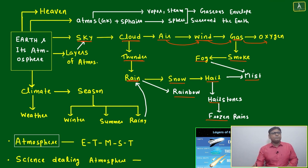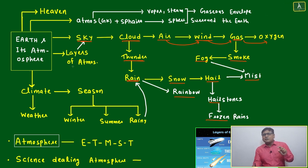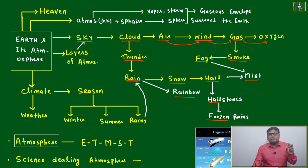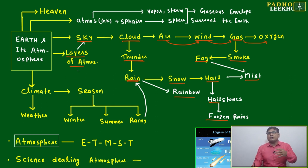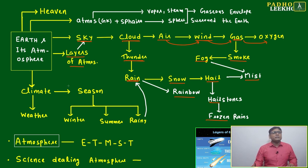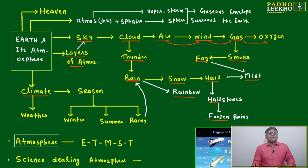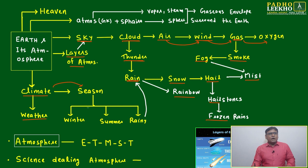The atmosphere is divided into different layers, each having different functionality, different constituents, and different ranges of temperatures. Based on the layers of atmosphere, we apply astrophysics, space science, and civil aviation — planes and hot air balloons — everything depends on the layers of the atmosphere.